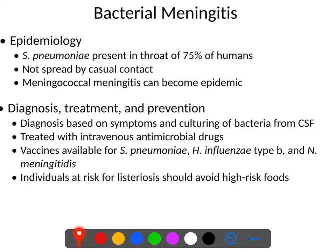Regarding epidemiology: Streptococcus pneumoniae, the most common cause of bacterial meningitis, is common native flora — it's present in the throat of about 75% of people, either as a transient or resident population. It's also the most common cause of bacterial pneumonia and is not generally spread by casual contact. It usually infects after another disease or something that lowers your immune response. Meningococcal meningitis — Neisseria meningitidis — can become epidemic especially in crowded, panicked situations.